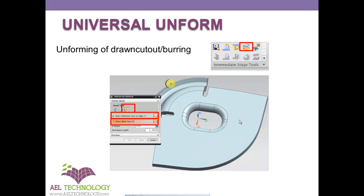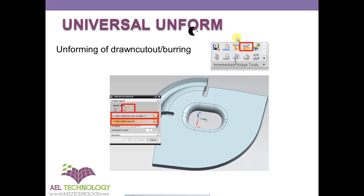Next, we have a feature called drawn cutout, also known as burring. This is also not a common way of doing unforming, so we use a new tool for unfolding this. It is called Universal Unform, and you can find it in intermediate state tools — this is its icon.